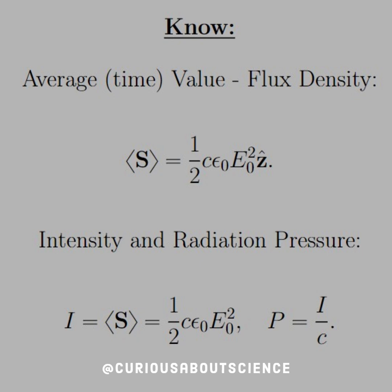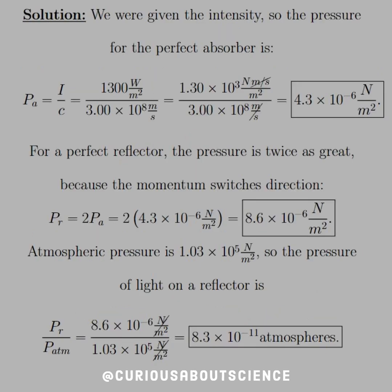So let's go ahead and dive in. Solution is pretty simple. We were given the intensity. So the pressure for a perfect absorber is P_A equals I over C. Intensity is equal to 1300, which was given. C is equal to speed of light. Let them cancel out the units. And we're left with 4.3 times 10 to the negative 6 newtons per meter squared.